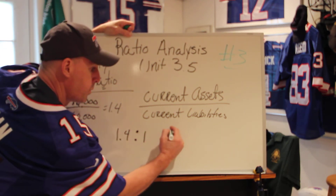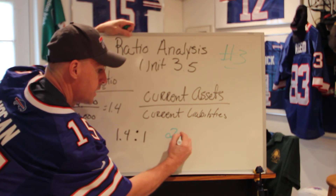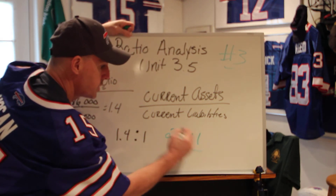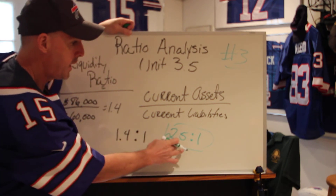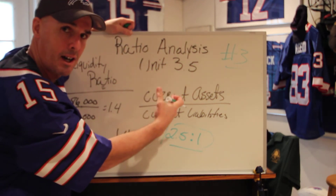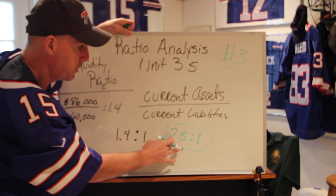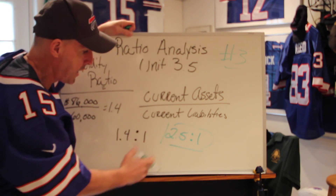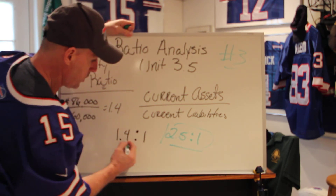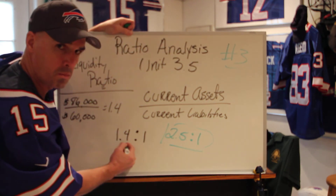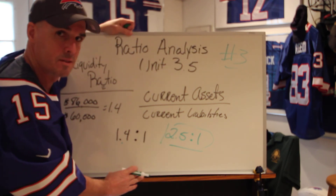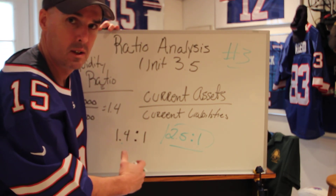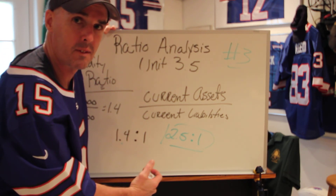If this number were up at $2.50 to every $1.00, that's way too high — you have way too much cash on hand. You should be doing something with your assets to get a better ratio. The closer you can get to maybe 1.2 or 1-to-1, you're in good shape.